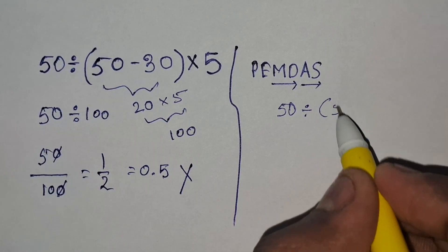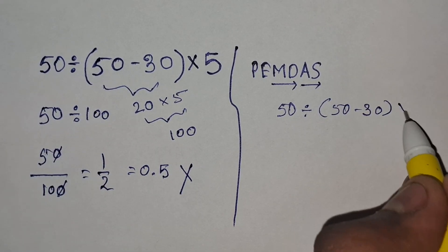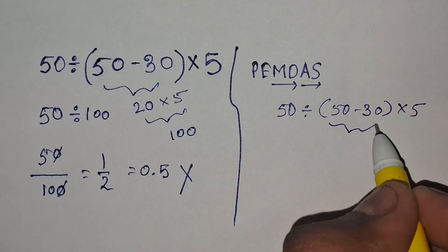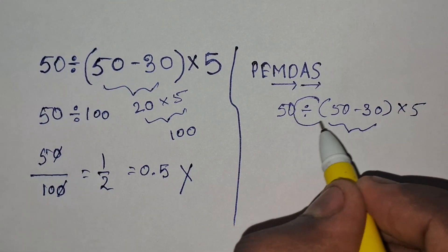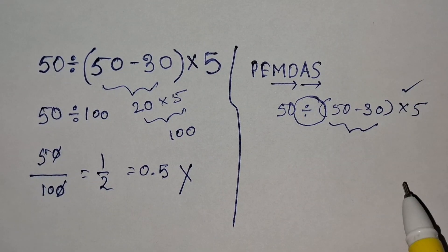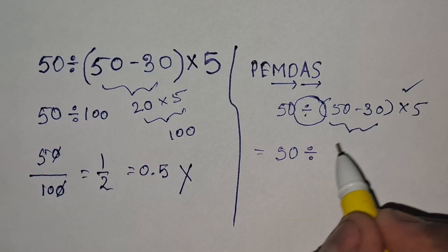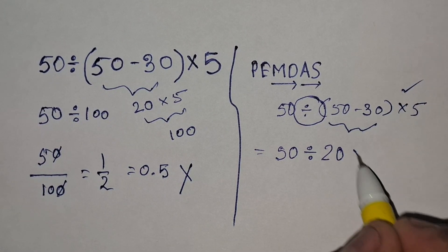So the expression is 50 divided by 50 minus 30 times 5. First, we have to solve the bracket, then the division and finally the multiplication. So 50 divided by 50 minus 30 equals 20 times 5.